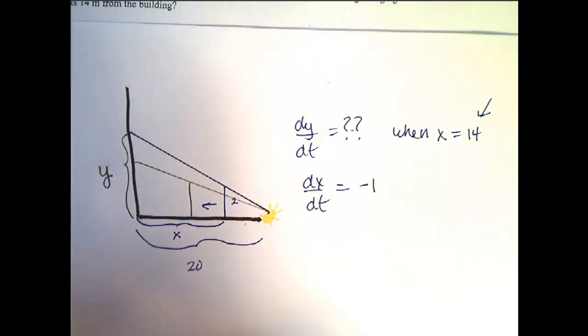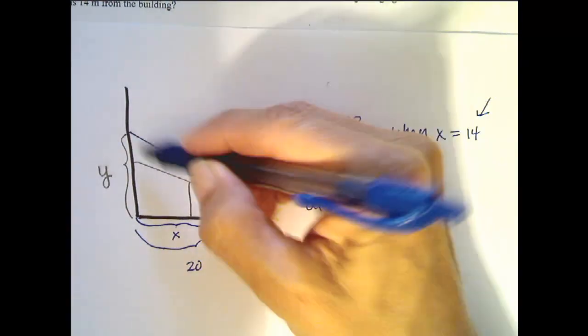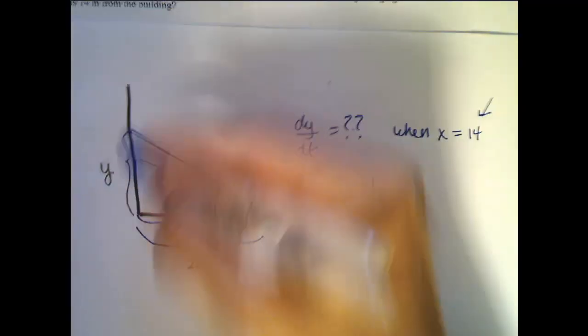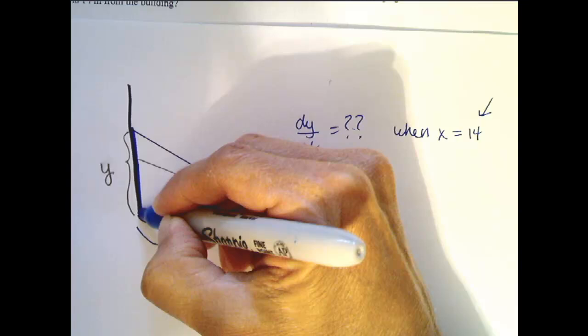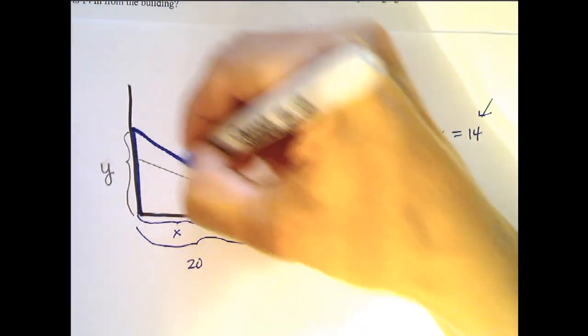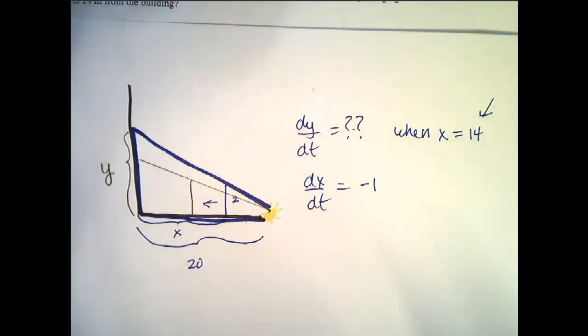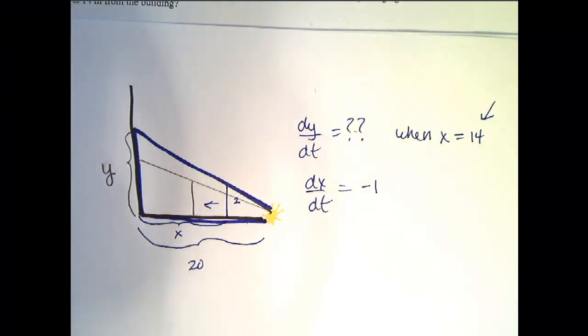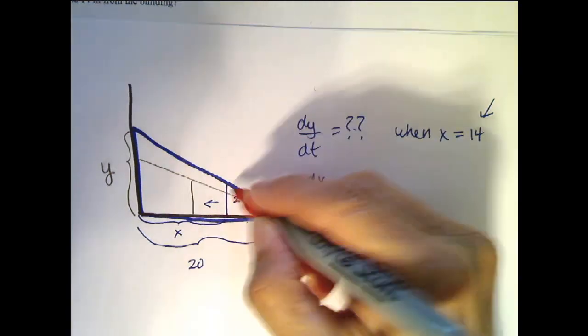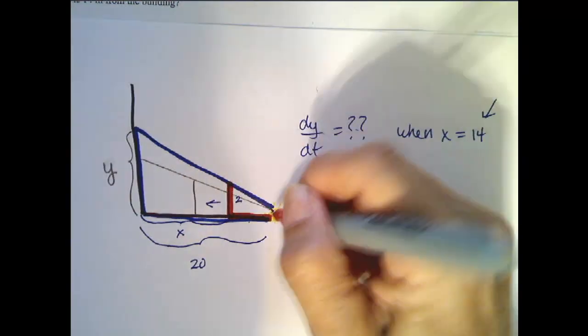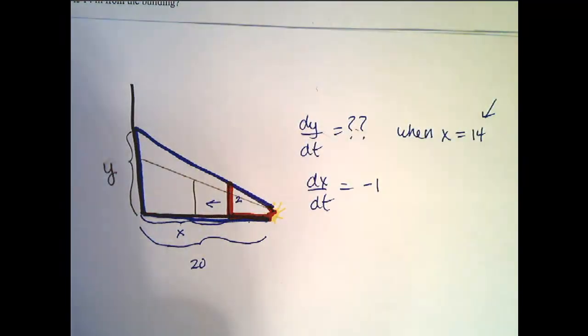and this is one of those cases where we will. So notice that I have this triangle right here, I'm going to outline it. This one right here is my super triangle. And then I have this smaller triangle inside this one, see it? This one right here. And these are similar triangles, which means the lengths of their sides are proportional.